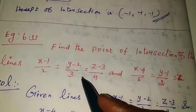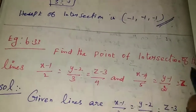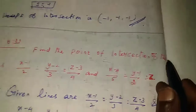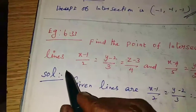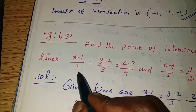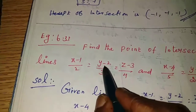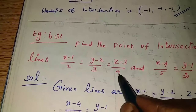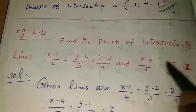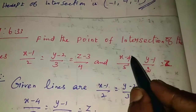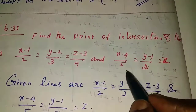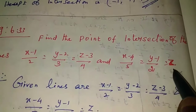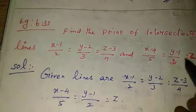Example 6.33. Find the point of intersection of the lines: (x minus 1)/2 = (y minus 2)/3 = (z minus 3)/4, and (x minus 4)/5 = (y minus 1)/2 = z.